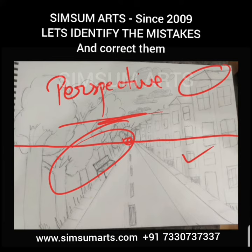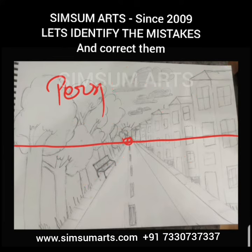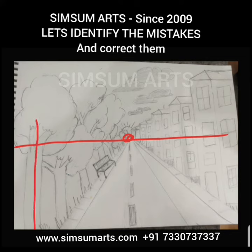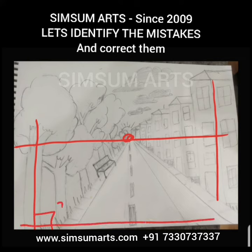So let's discuss the mistakes and see how to correct them. Whenever we are doing a one-point perspective — a single point perspective — we have to know that the left and right lines should be perfectly vertical, meaning 90 degrees to the lower line. The angulation of the photograph she took is a little slant, so it may not look perfectly vertical, but originally she has done it very much vertical.